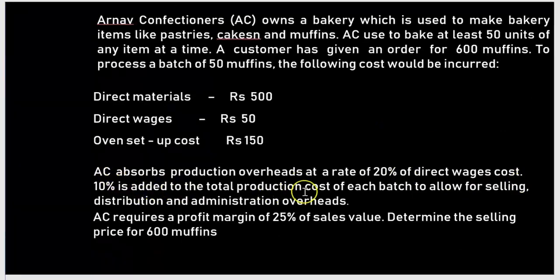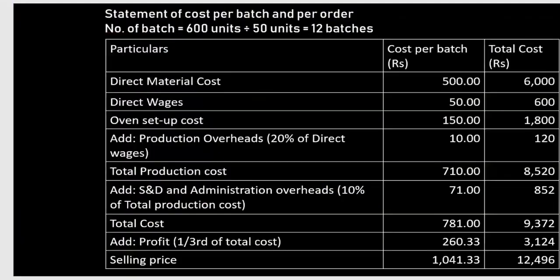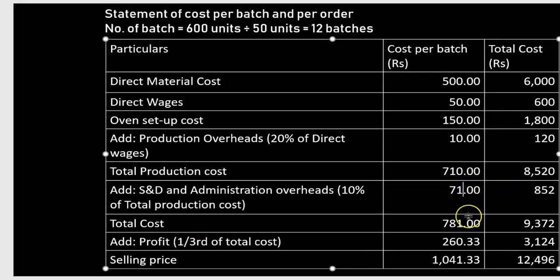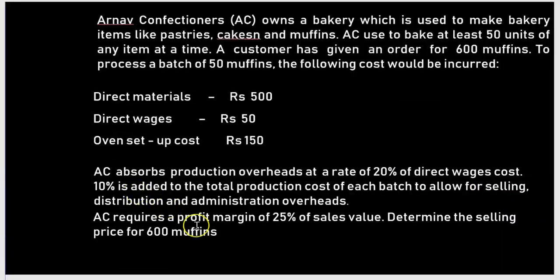Next, 10% is added to the total production cost of each batch to allow for selling, distribution, and administration overheads. That is 10% of rupees 710 = rupees 71 per batch, and 10% of 8520 = rupees 852 total. So the total cost per batch is 710 + 71 = rupees 781, and total order cost is 8520 + 852 = rupees 9372.